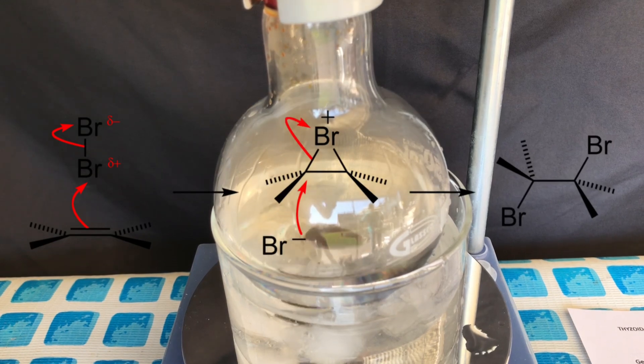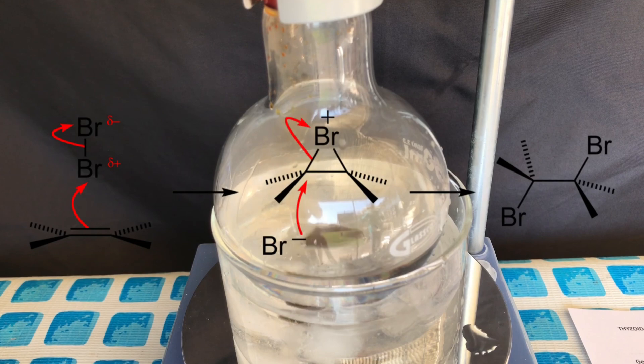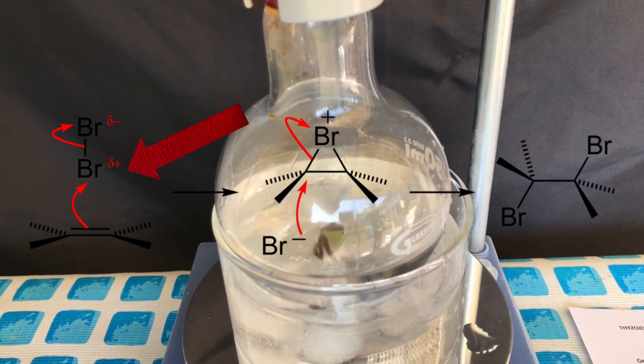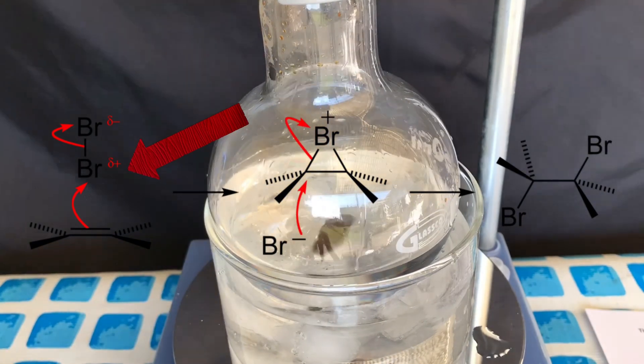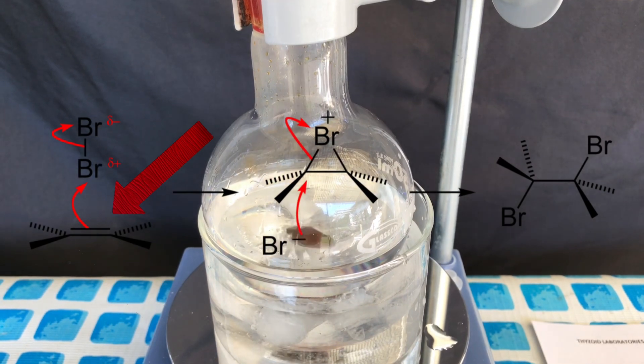This isn't styrene, but just imagine a phenyl group on one of these bonds. As the bromine molecule approaches the double bond, the bromine closer to the double bond takes on a partial positive charge. The atom has become electrophilic. A sigma bond with both of the carbon atoms involved is formed.